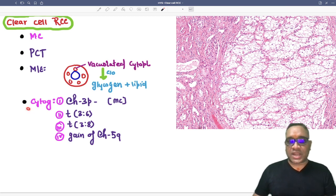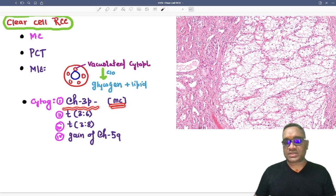And molecular cytogenetics will confirm the diagnosis, and most common thing will be chromosome 3P deletion. So minus is deletion. This is the most common cytogenetic change we are seeing in the clear cell RCC. Other cytogenetic changes are translocation 3;6, translocation 3;8, and gain of chromosome 5Q.